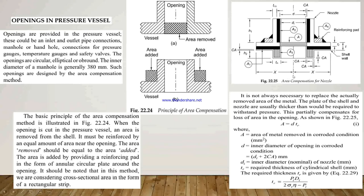In figure 22.25, the area compensation for the nozzle is shown. The reinforcing pad is added around the nozzle, with corrosion allowance CA kept at appropriate locations. The heights H1 and H2 and wall thicknesses are also indicated. It is not always necessary to replace the actually removed area. The shell and nozzle are usually thicker than required to withstand pressure alone, and these partially compensate for the loss of area at the opening.